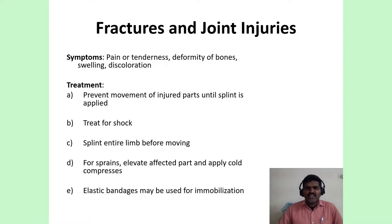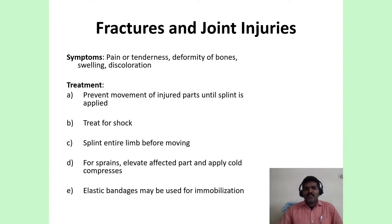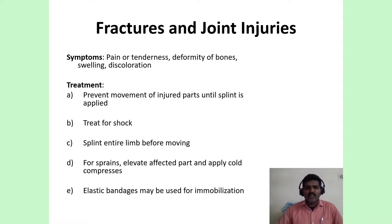Fractures or joint injuries happen especially due to trauma and are more common in children when they fall during play. Symptoms include pain or tenderness, deformity of the bones, swelling, and discoloration. Treatment includes preventing movement of the injured parts until a splint is applied. Treat for any shock if present, give oral fluids, and splint the entire limb before moving. For sprains, elevate the affected part and apply cold compresses; elastic bandages may be used for immobilization.